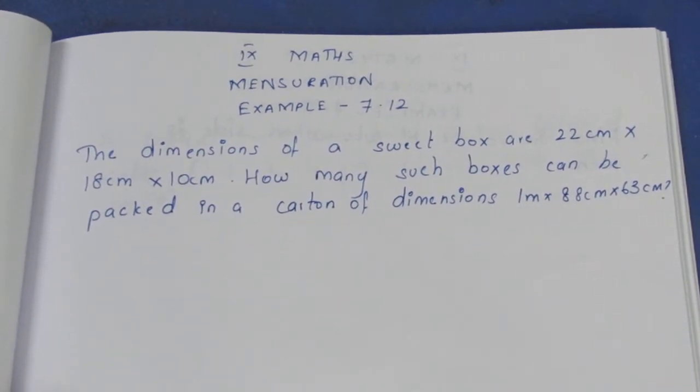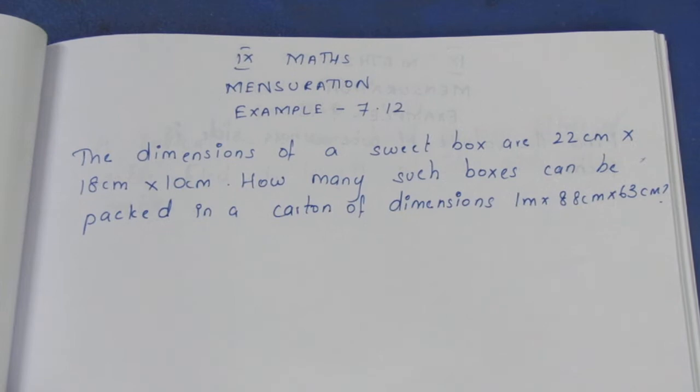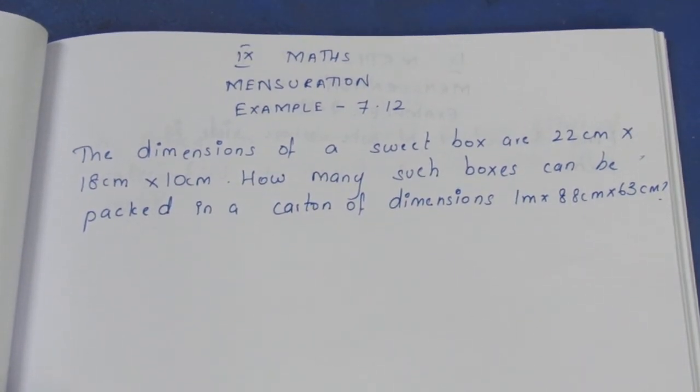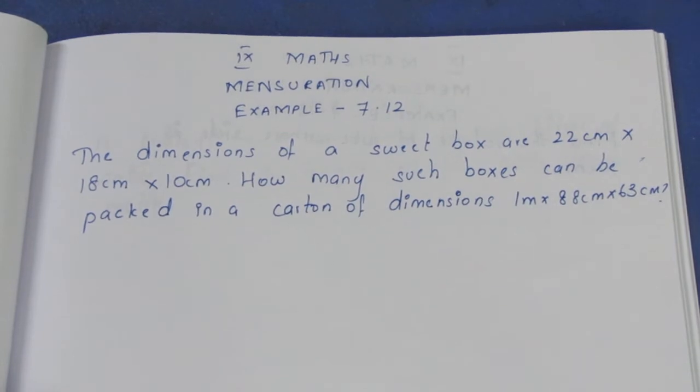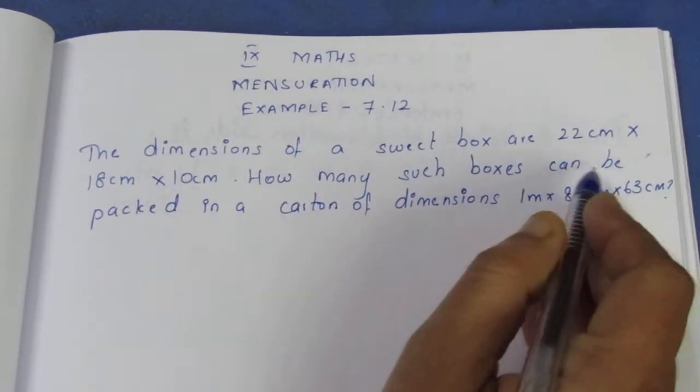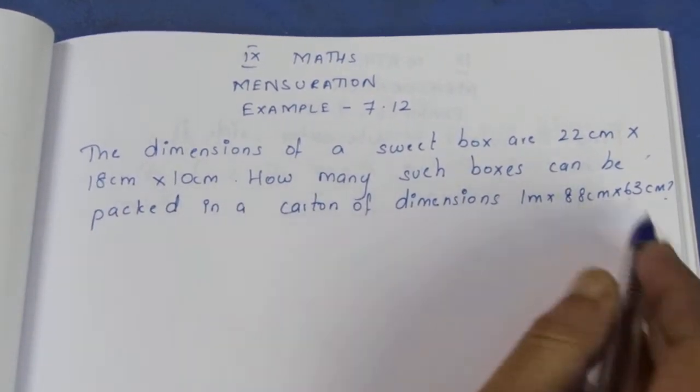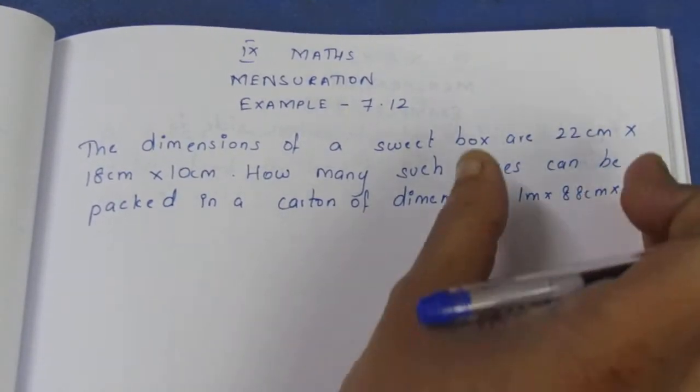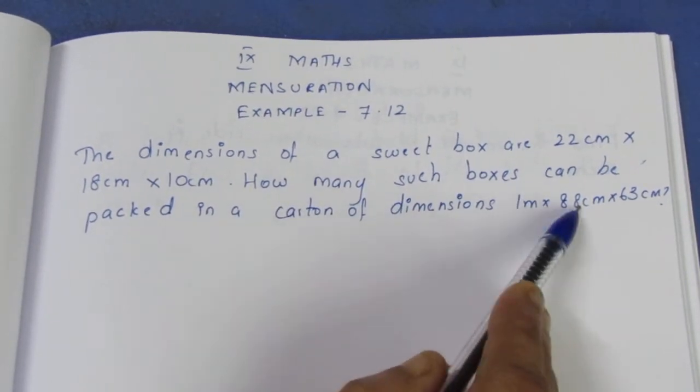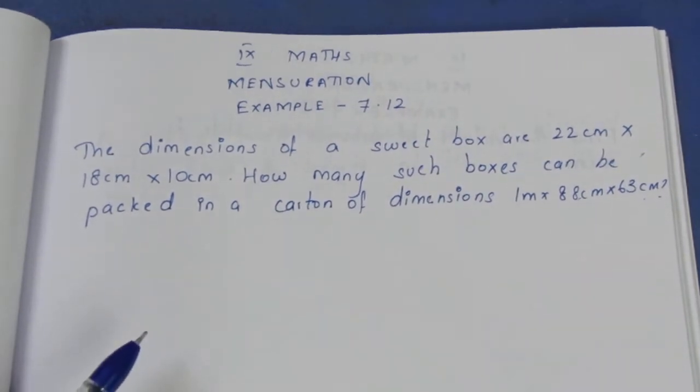The dimensions of a sweet box are 22cm × 18cm × 10cm. With 3 dimensions, we have a cuboid with length, breadth and height. How many such boxes can be packed in a carton? There is a big carton box with dimensions 1m × 88cm × 63cm.